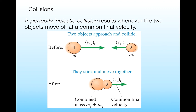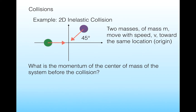In a perfectly inelastic collision, two objects approach each other and collide, and then they move off with the same final velocity, basically because they stick together. For instance, if you have a ball made out of putty and you ram it into another ball, the putty ball will stick to the initial ball. This type of collision is actually easy to calculate because they have the same final velocity and the two masses combine at the end.